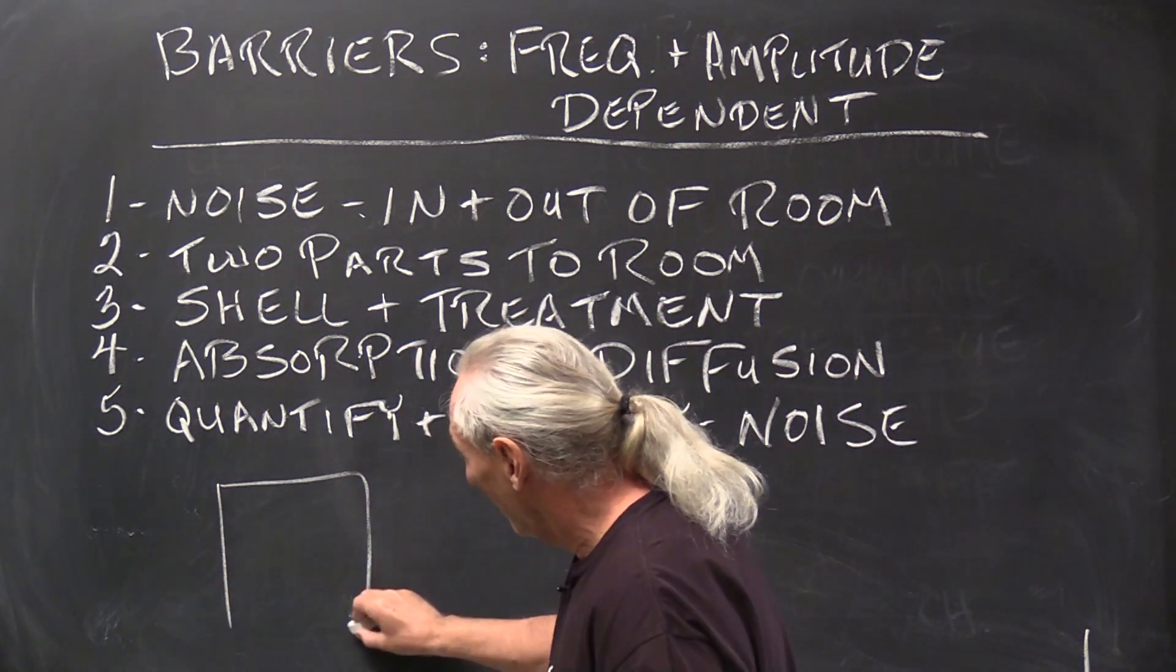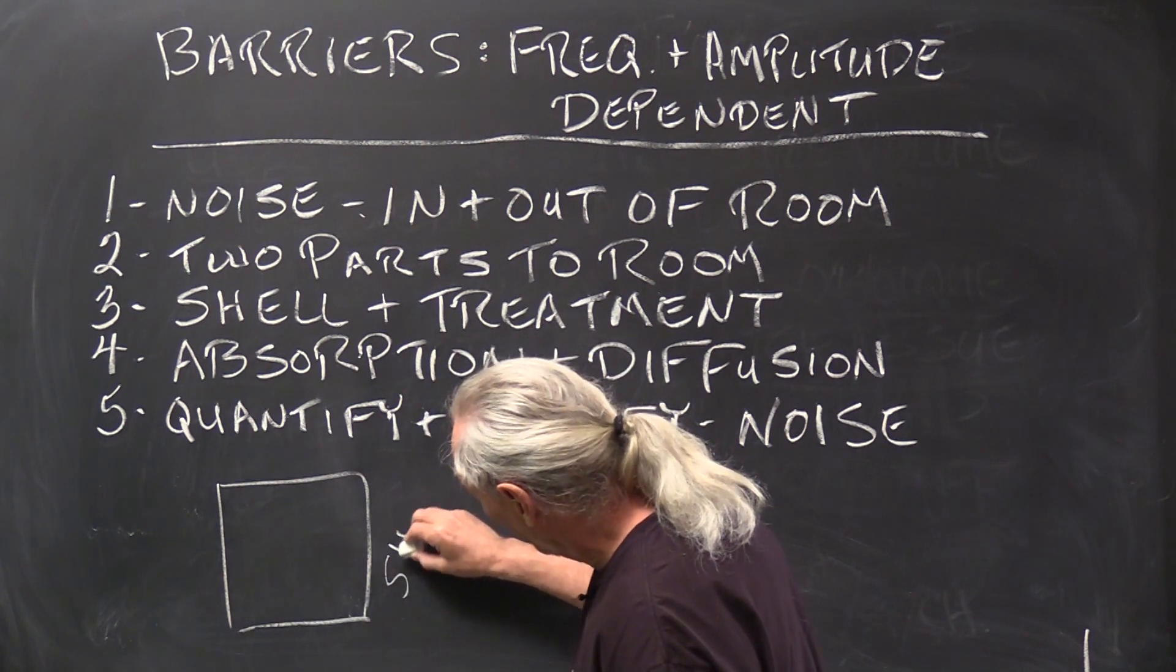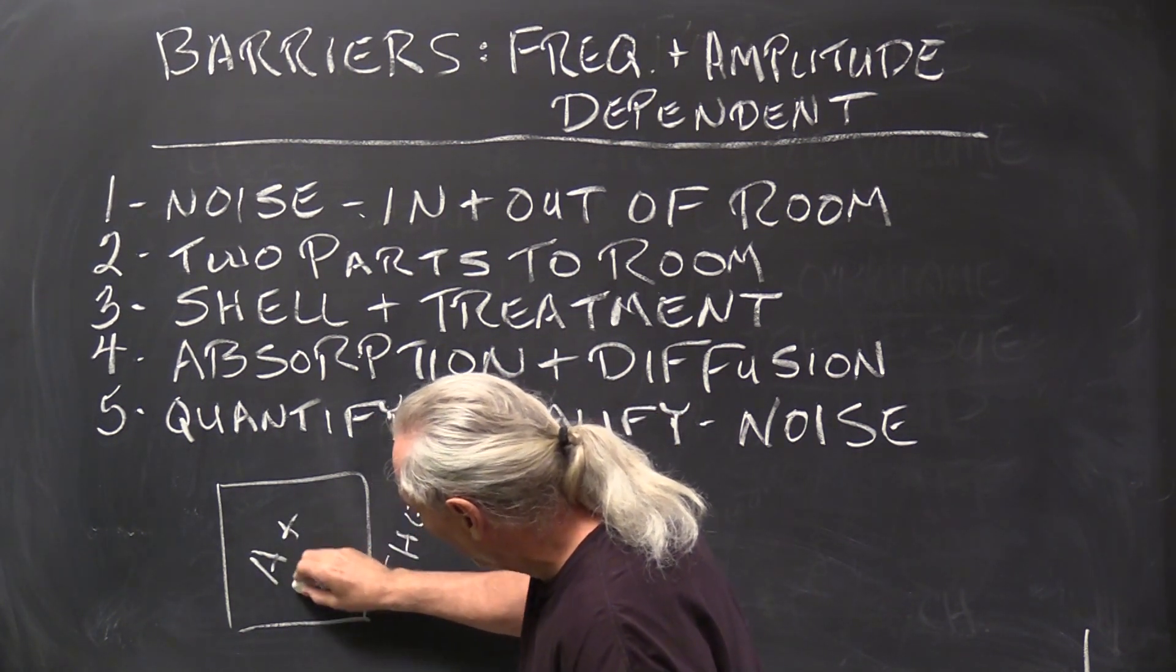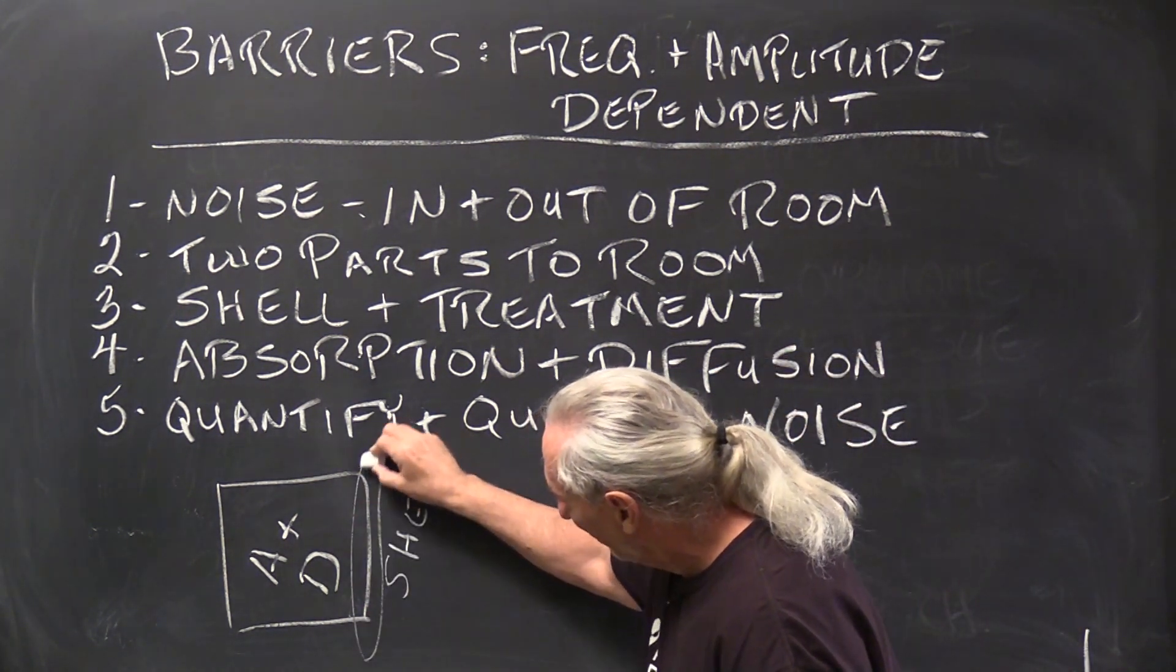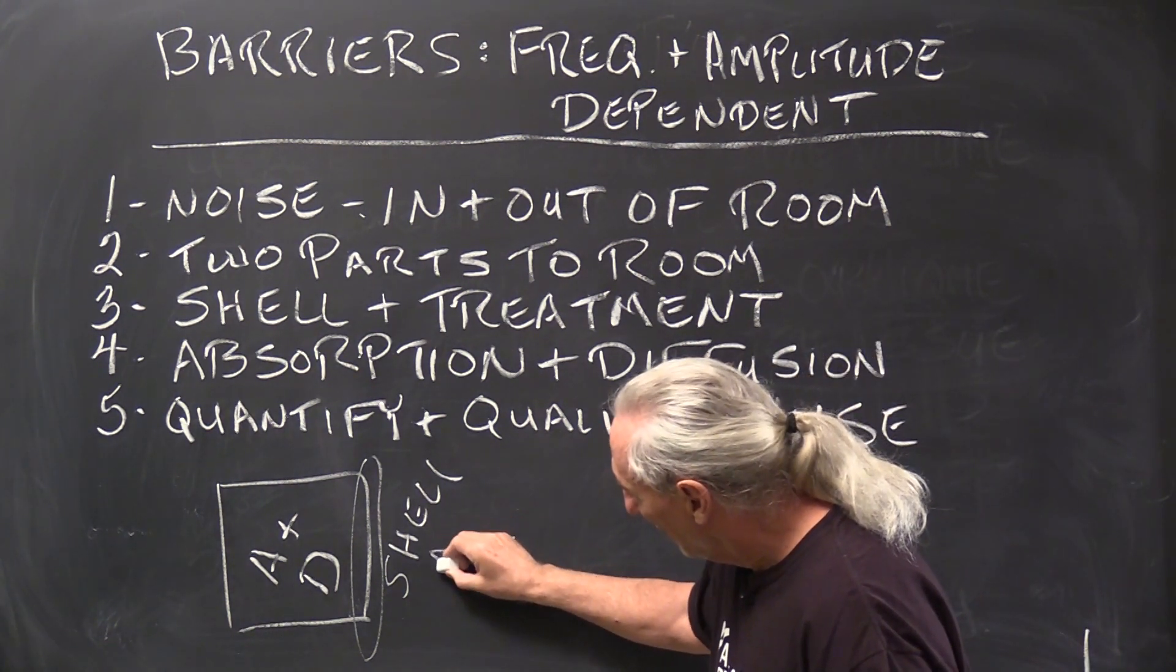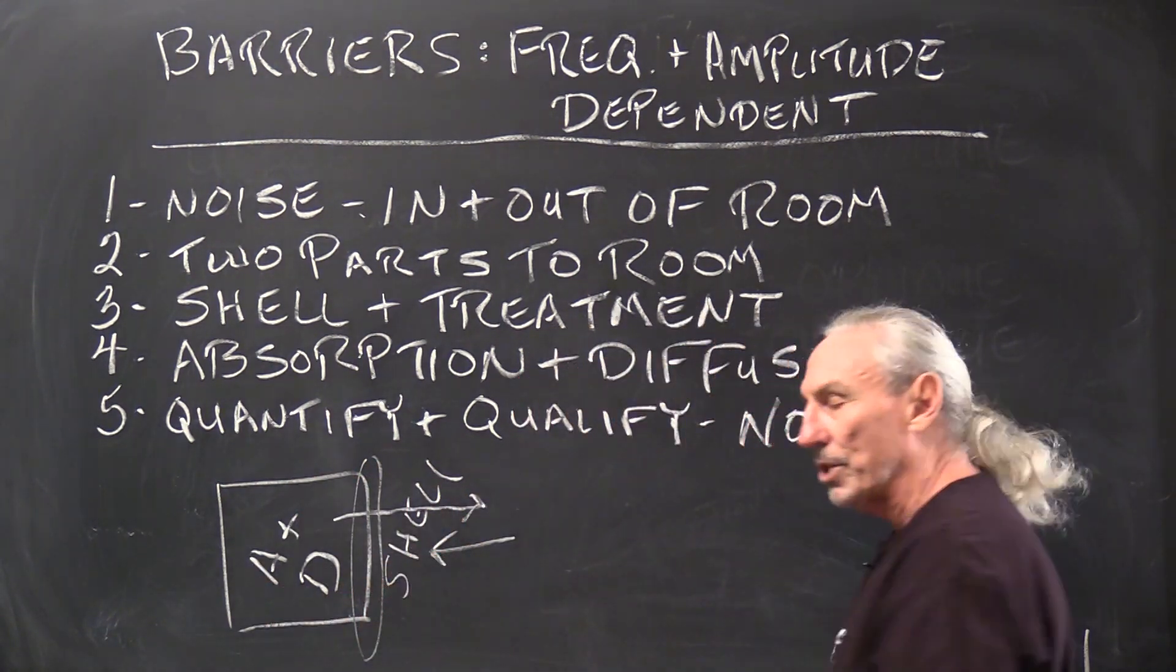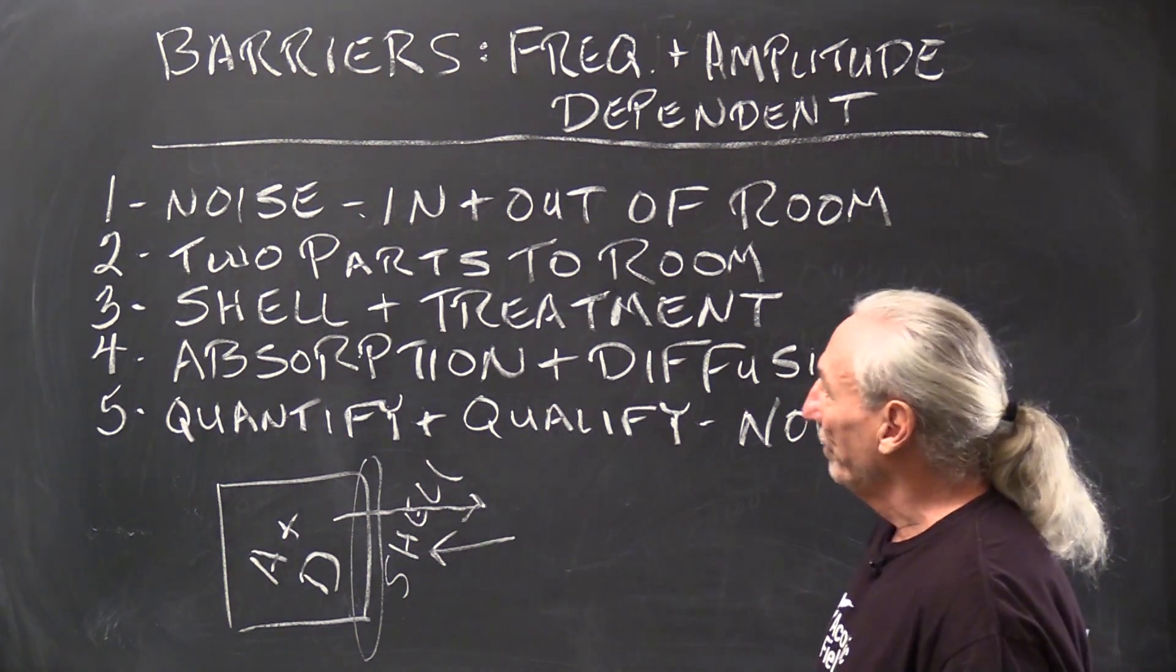So we know that in our room, there's two parts to our room. There's the external wall, which we're going to call the shell, and then the interior part of the room, which is for absorption and diffusion. Today, we're going to focus on the shell. Because that's where noise comes in and noise leaves.